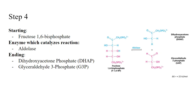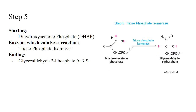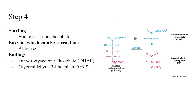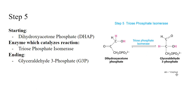In step five, DHAP (dihydroxyacetone phosphate) is converted into glyceraldehyde-3-phosphate using an enzyme called triose phosphate isomerase. This effectively doubles the reactions going forward, because after step four we have two three-carbon molecules. The delta G is close to zero, so both sides can isomerize fairly readily, but for the purpose of glycolysis we convert DHAP into G3P.